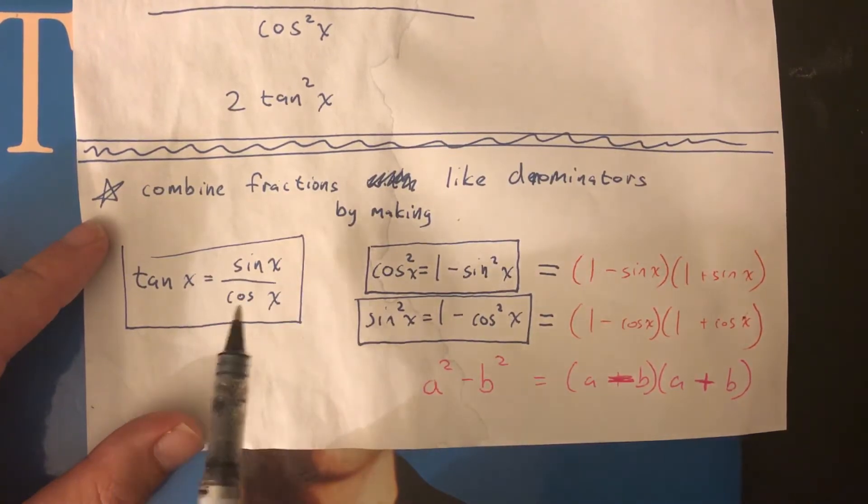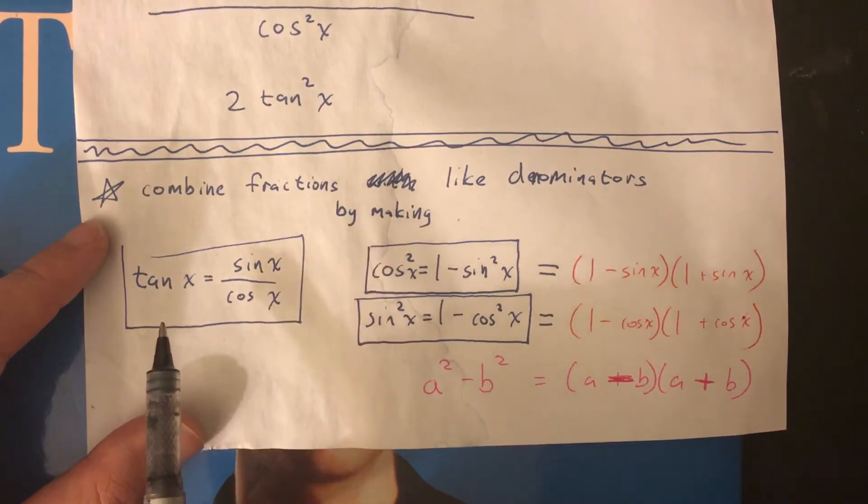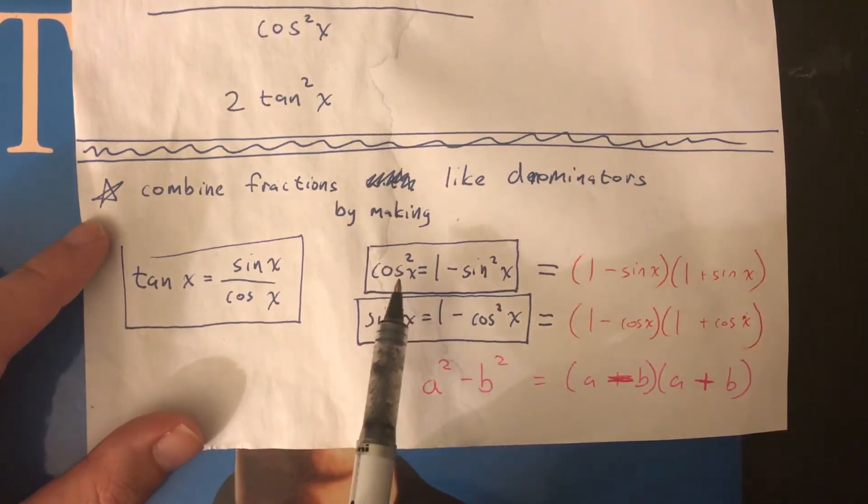When would you use this? You'd use it when on the left side of the equation, you see tan, and on the right side, you don't see it. You just see sine or cos. How can you get tan out of there? Switch it for sine over cos.